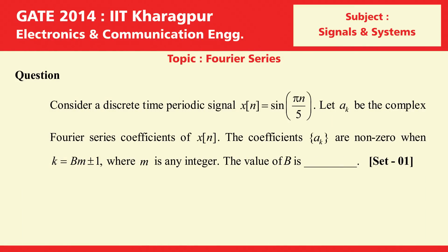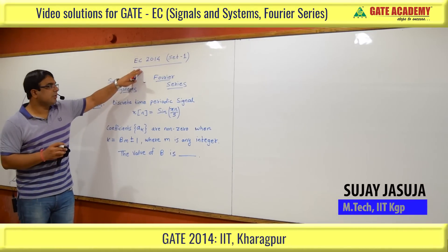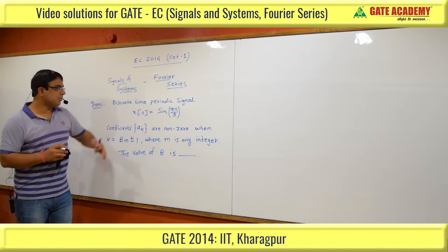Given a discrete-time periodic signal x[n] = sin(πn/5), let a_k be the complex Fourier series coefficients of x[n]. The coefficients a_k are non-zero when k is equal to bm ± 1, where m is any integer. Find the value of b. This is a GATE exam EC 2014 Set 1 question on the Fourier series topic.